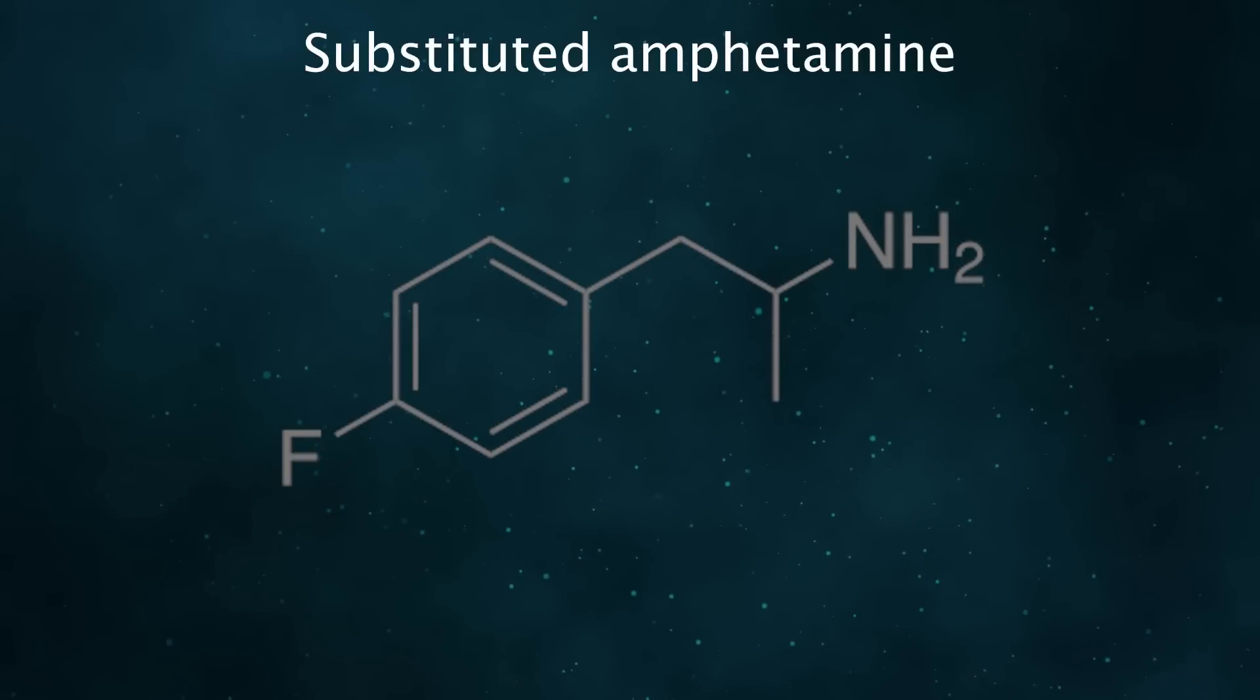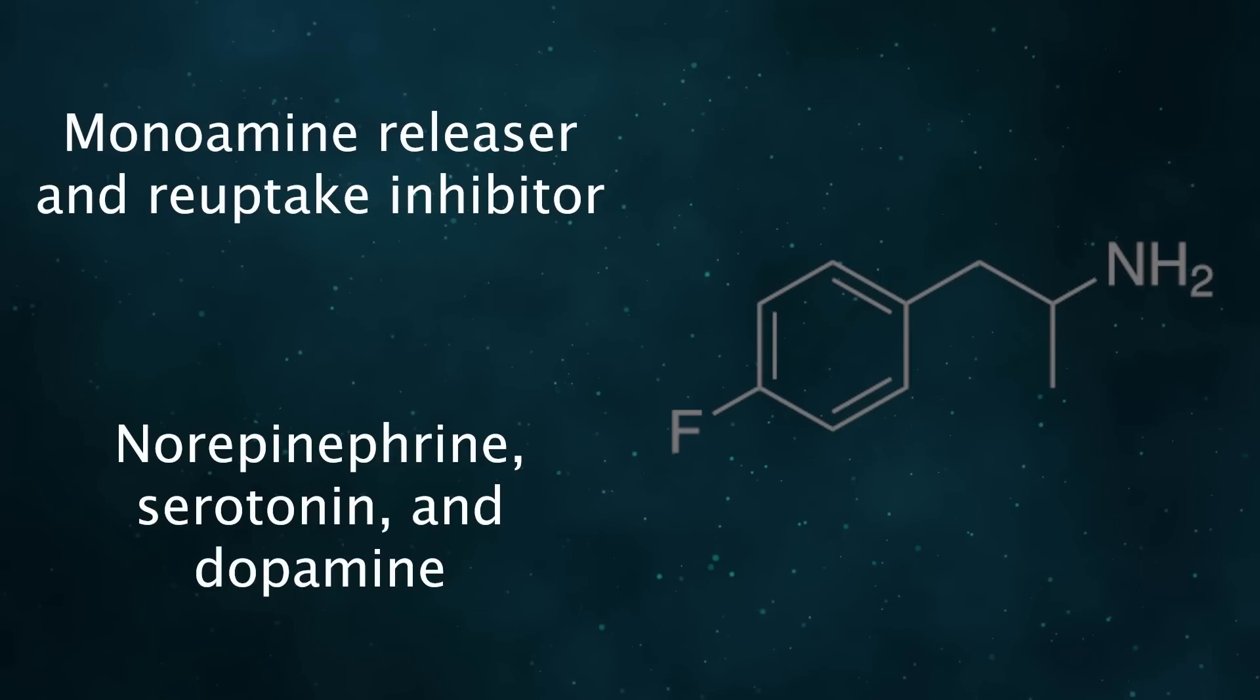4-FA is a substitute amphetamine, with a fluorine placed at the 4-position on the amphetamine backbone. It operates as a monoamine releaser and reuptake inhibitor, affecting norepinephrine, serotonin, and dopamine.